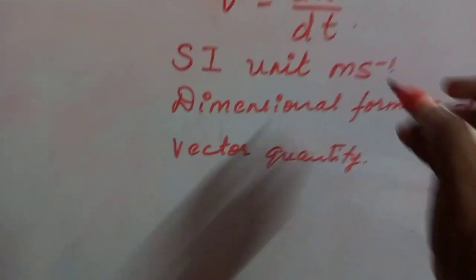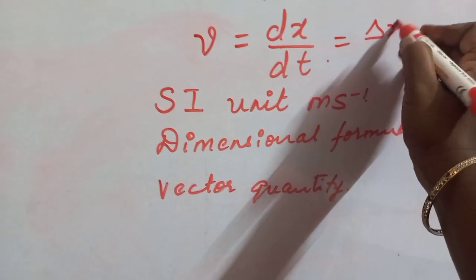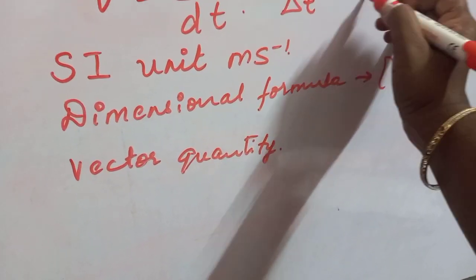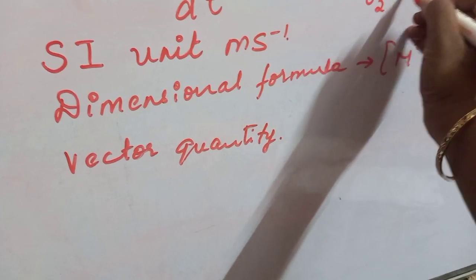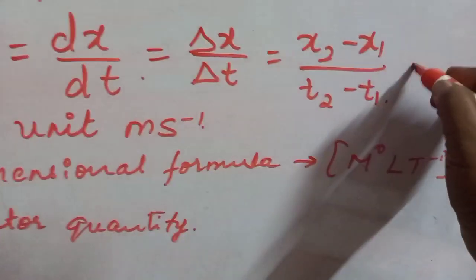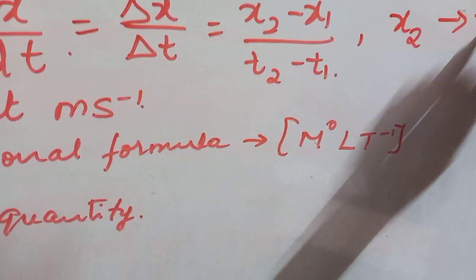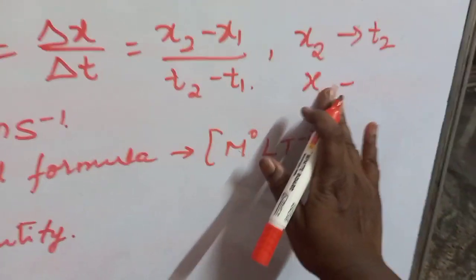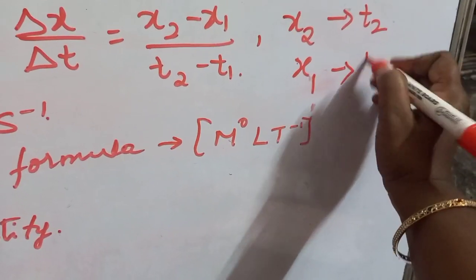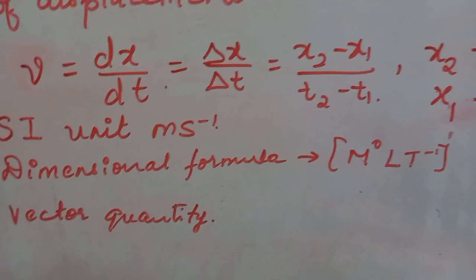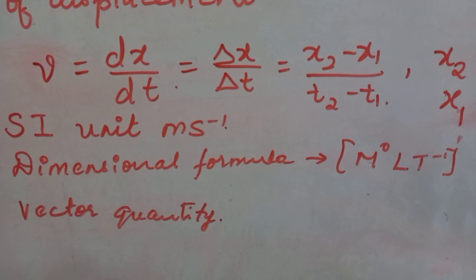Velocity can also be written as Δx/Δt = (x₂ − x₁)/(t₂ − t₁), where x₂ is the final position at time t₂ and x₁ is the position at time t₁. Average velocity is similarly v_avg = Δx/Δt.